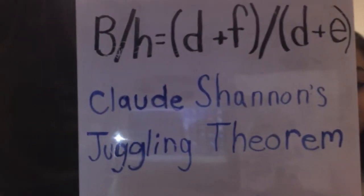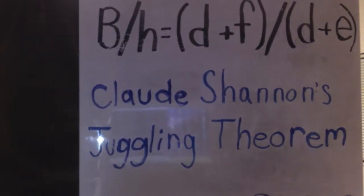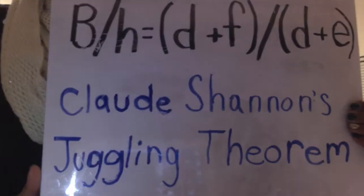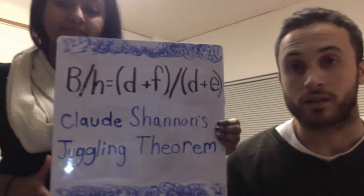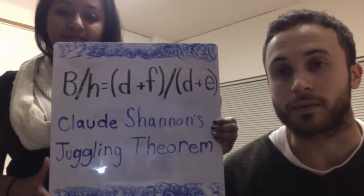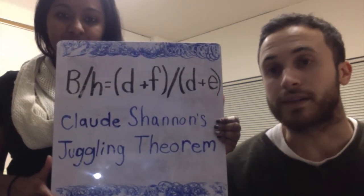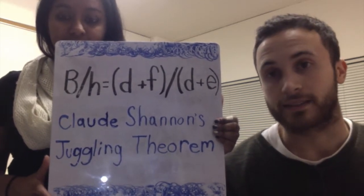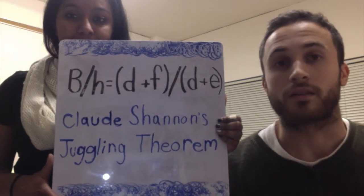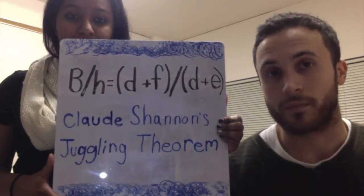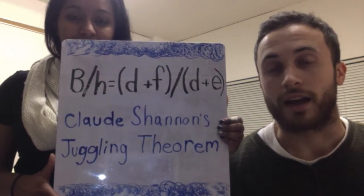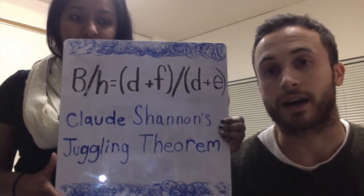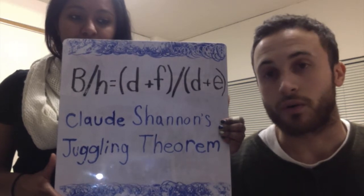He created a robot that could juggle along with the theorem. Shannon's theorem relates the variables of the pattern's timing with the number of objects being juggled and the number of hands. B equals the number of balls, H equals the number of hands, D equals the dwell time between the catch and the next throw, F equals the flight time of the ball, and E equals the empty time between the throw and the next catch.